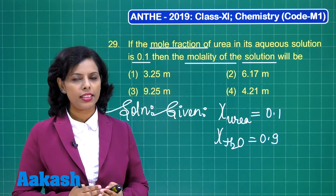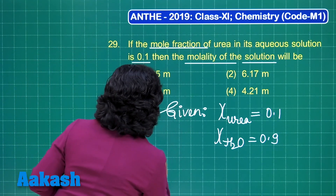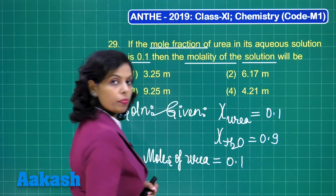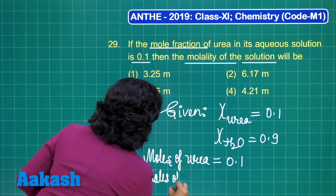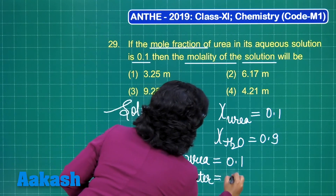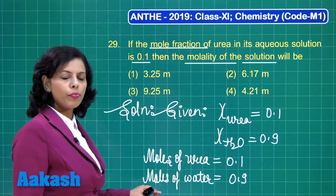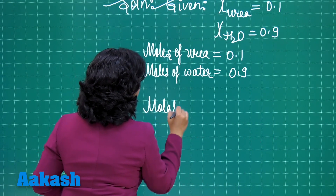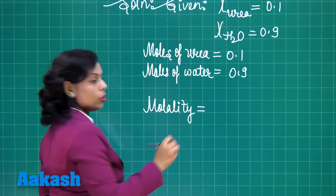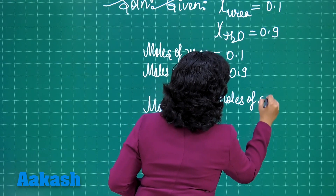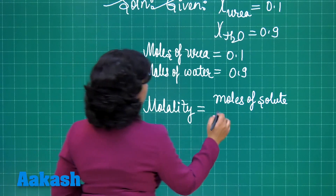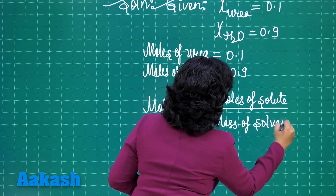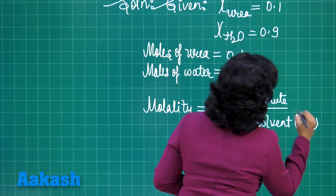We assume that 1 mole of solution is present in total. In that case, the moles of urea would be 0.1, and similarly the moles of water would be 0.9. So we have the moles. Now what do we need to find out? Molality. The formula for molality: molality is a concentration term equal to moles of solute divided by mass of solvent in kg.